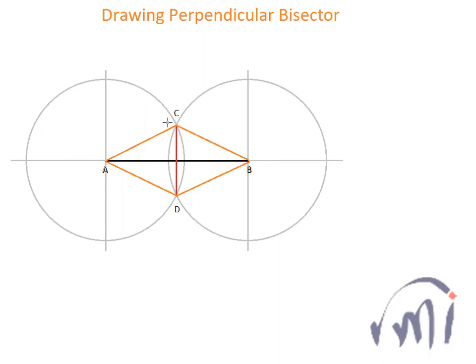That means the quadrilateral ACBD is a rhombus where AB and CD are the diagonals of the rhombus. And we know the diagonals of the rhombus intersect each other at 90 degrees.